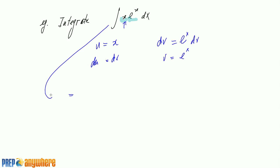Now, this whole thing will equal to u times v, so x times e to the power of x, subtract by dx times e to the power of x. So, e to the power of x dx, which is very easy to integrate. e to the power of x plus constant.